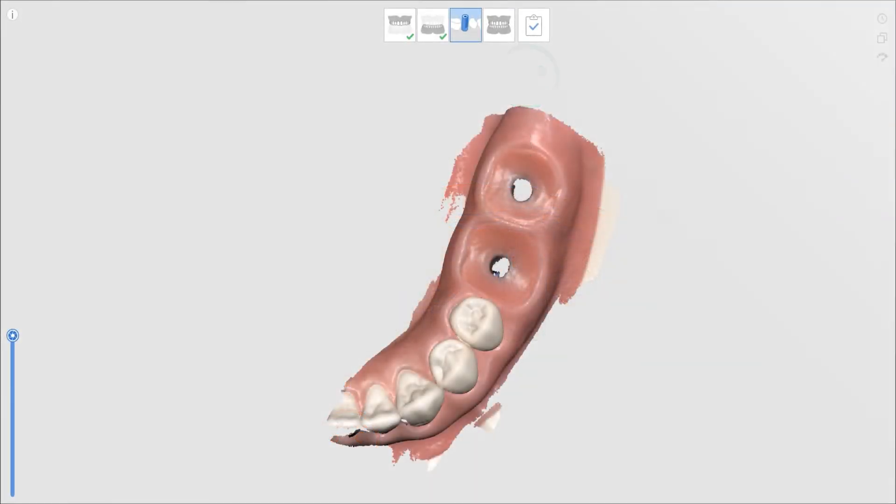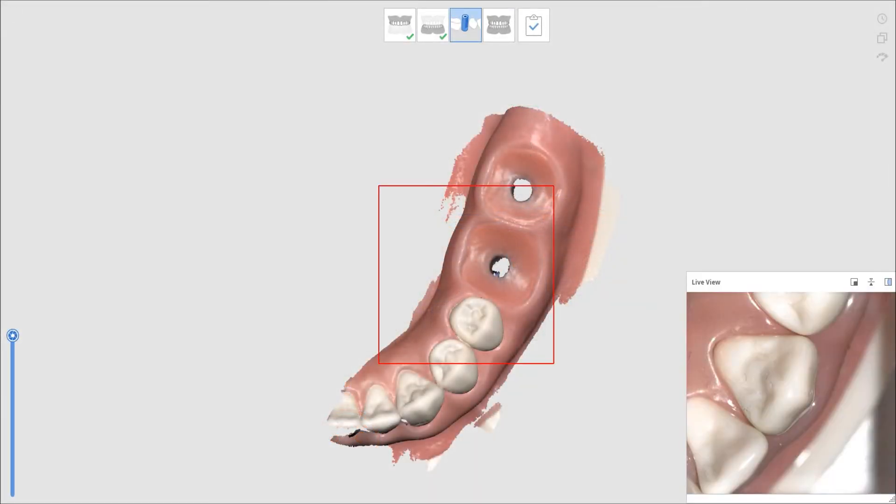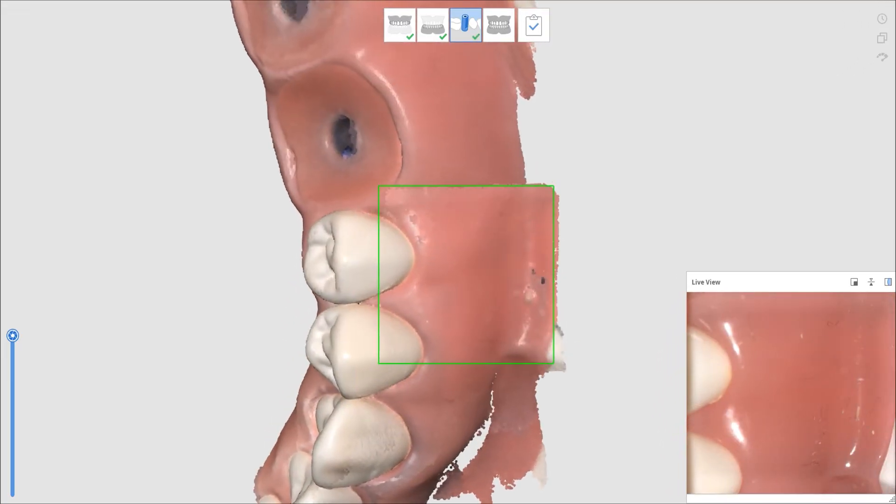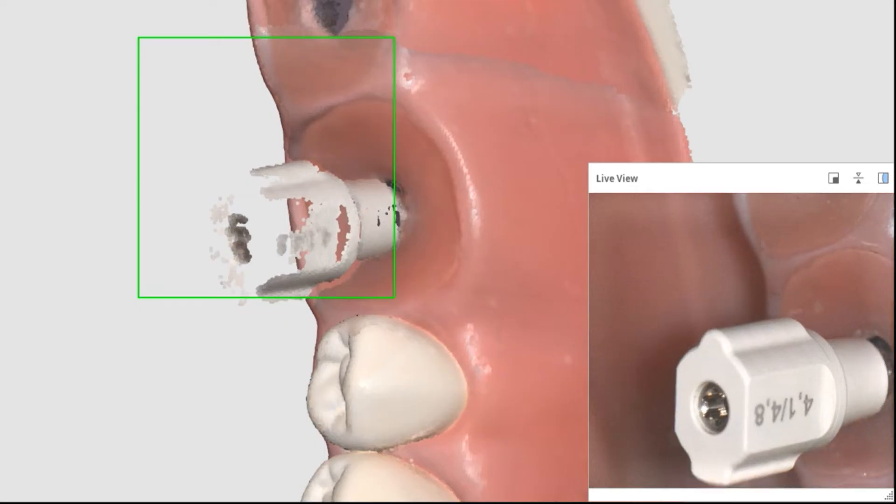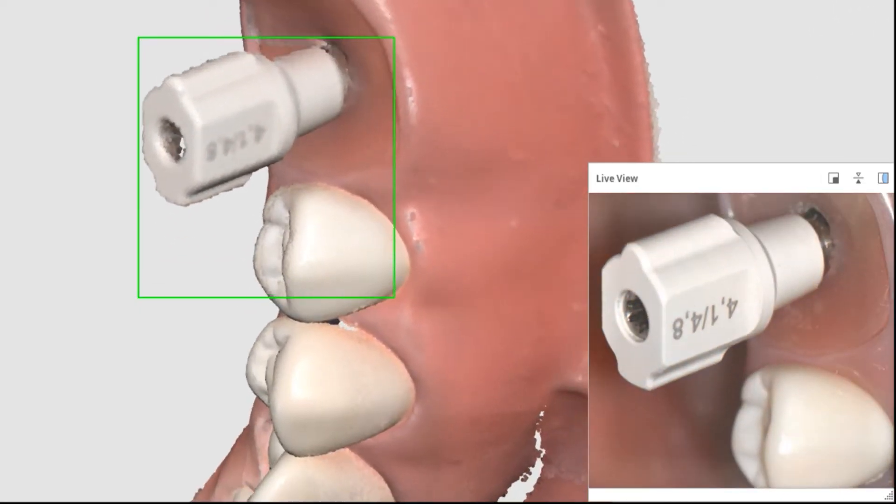Start scanning an adjacent tooth of the ScanBody area. Move from the gingiva to the ScanBody slowly to acquire sufficient data.